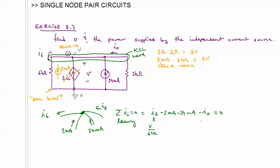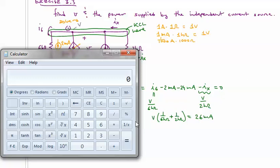And IX, this is minus IX, so we're going to replace minus IX with V over 2 kiloohms. All right, so now we can solve for V. We'll have V times 1 over 6 kiloohms plus 1 over 2 kiloohms is equal to 26 milliamps. And V is equal to, so we'll have 6 inverse plus 2 inverse equals, and then we're going to take the inverse of that and multiply it by 26, 39.